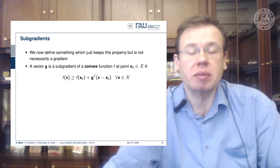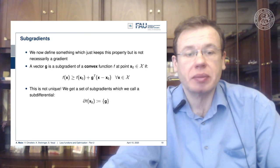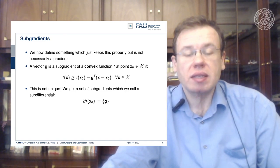And the nice thing with this is that we essentially can relax the requirement of being able to compute a gradient. There could be multiple of those g's that fulfill this property, so this is not unique, and the subset of all of the subgradients is then called the subdifferential.